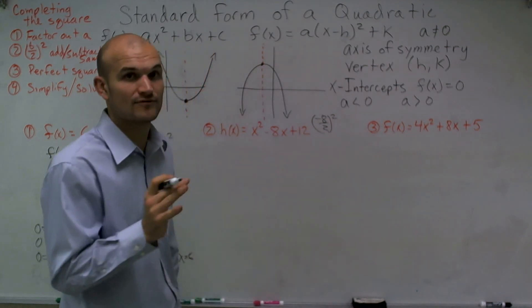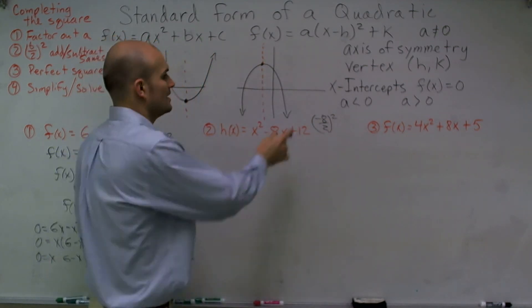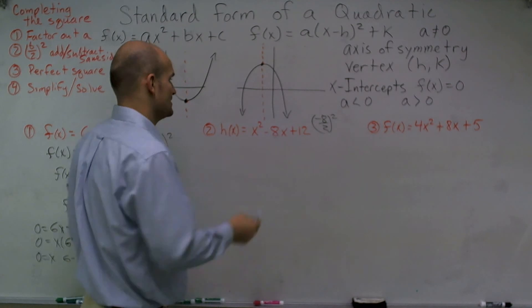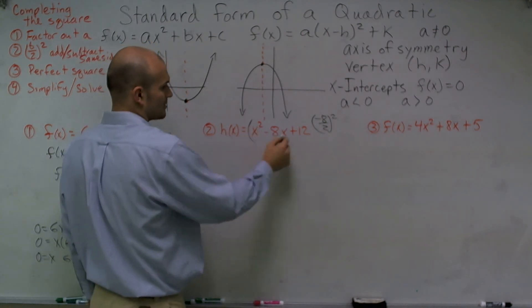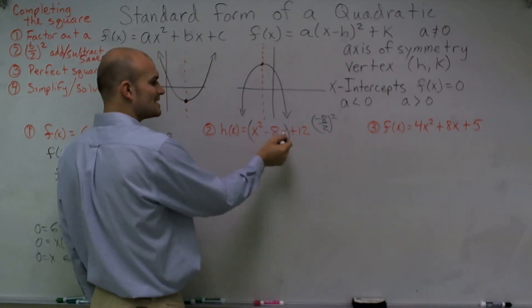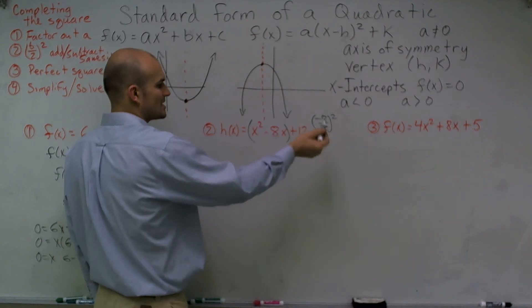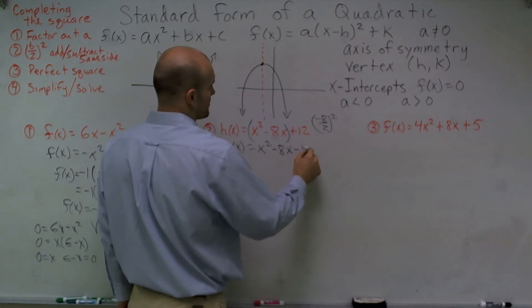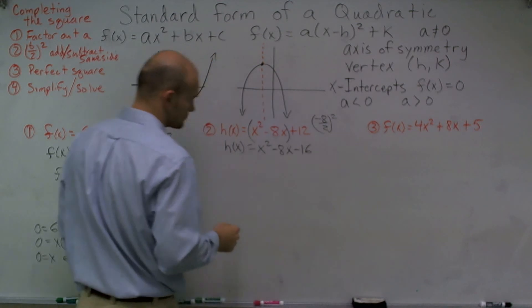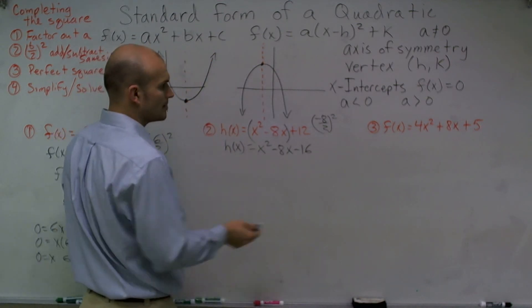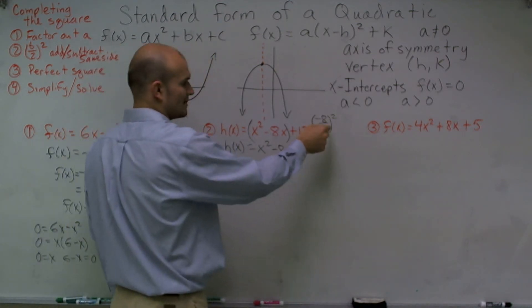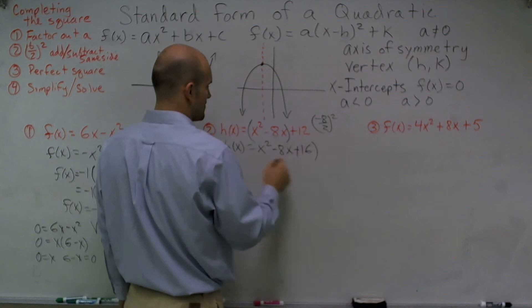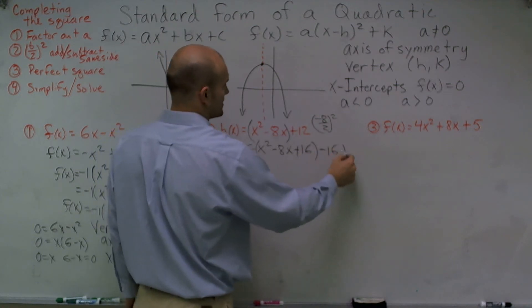Negative 8 divided by 2 is negative 4. Negative 4 squared is positive 16. So what I'm going to do is now I'm going to add my 16 inside my parentheses and then subtract it out. So I have h(x) = x² - 8x + 16 - 16 + 12.